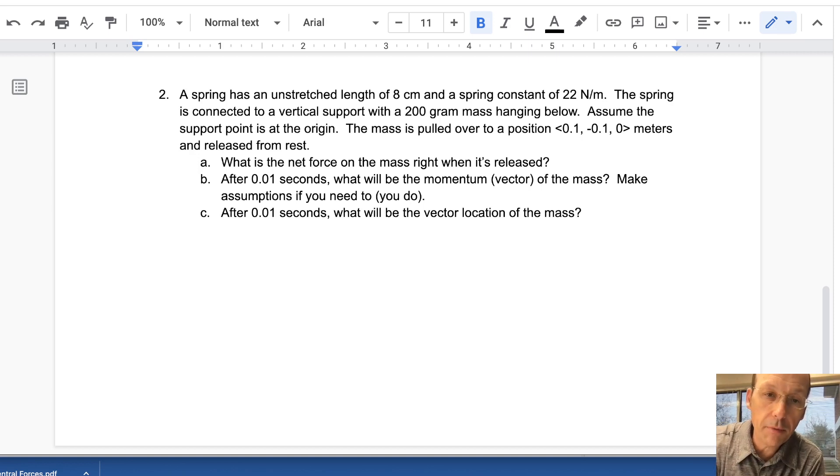Here is another practice problem. I'm going to put all the important information on the paper too, but a spring has an unstretched length of 8 centimeters and a spring constant of 22 newtons per meter. The spring is connected to a vertical support with a 200 gram mass hanging below. The support is the origin and the mass is pulled over to a position 0.1, negative 0.1, zero meters and released.